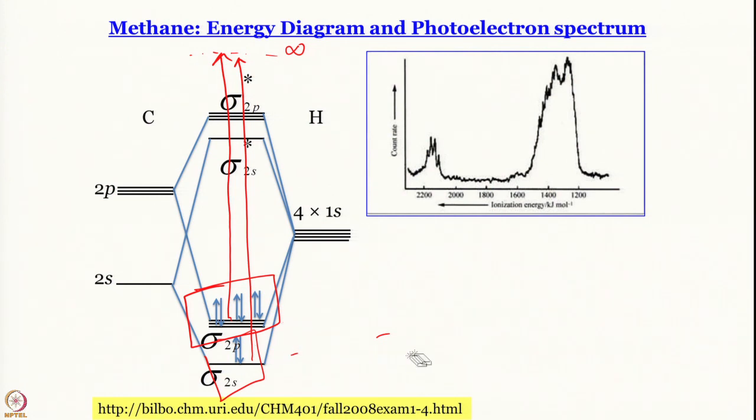Now is a moment of truth — I will show you the photoelectron spectrum and you can judge for yourself which picture is correct. Remember Max Planck: experimental results are the only truth. And here is the truth: you see two bands — a larger band at lower ionization energy and a smaller band at higher ionization energy. The delocalized MOT picture gives the correct result; the localized MOT picture does not.